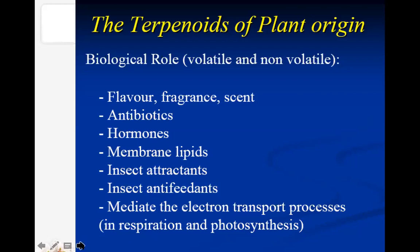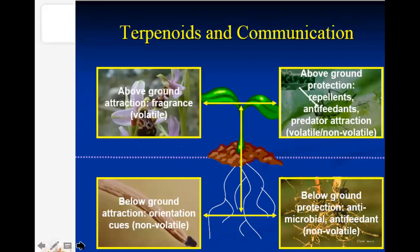Terpenoids are very important defense compounds in plants, as well as compounds for communication. For example, above ground, some Terpenoids attract pollinators — the fragrance of flowers attracts pollinator insects and other beneficial organisms. Above ground, there are also Terpenoids which help plants protect themselves from attack by other organisms — those Terpenoids act as repellents, antifeedants, and predator attractants.